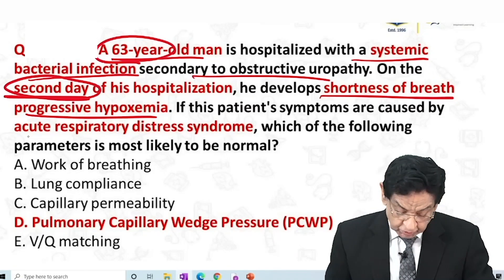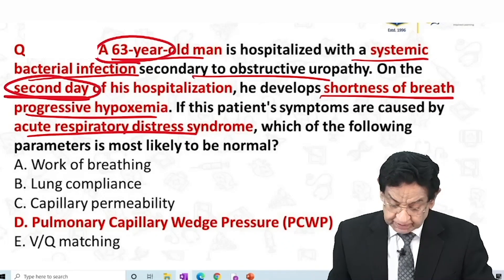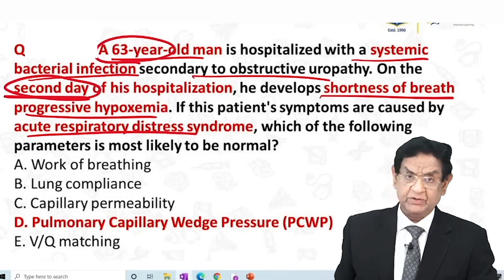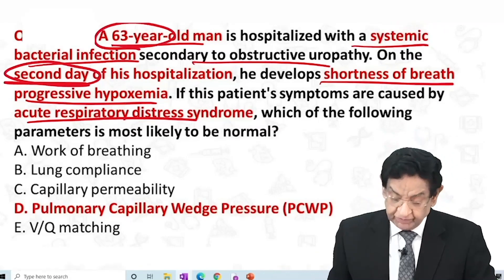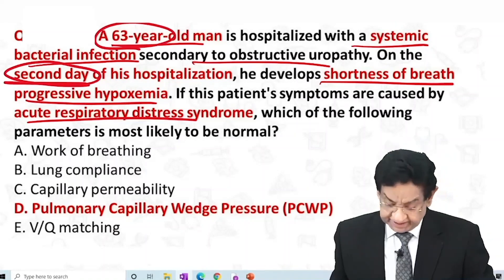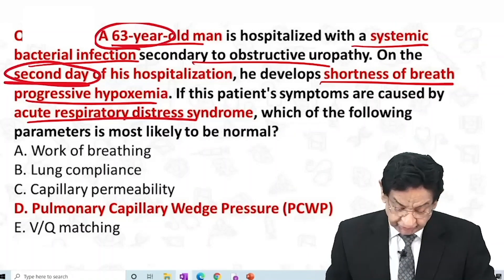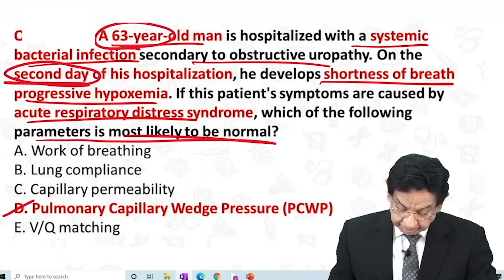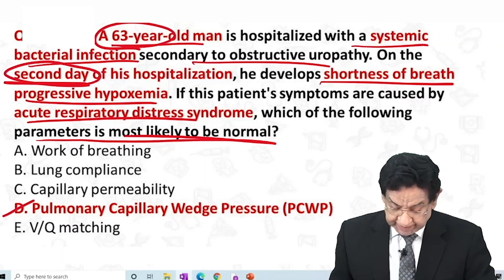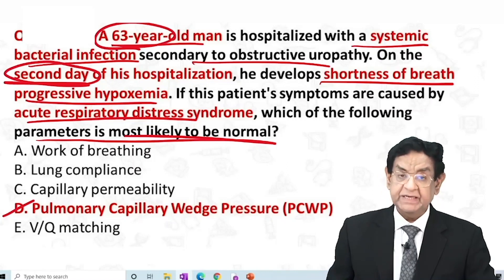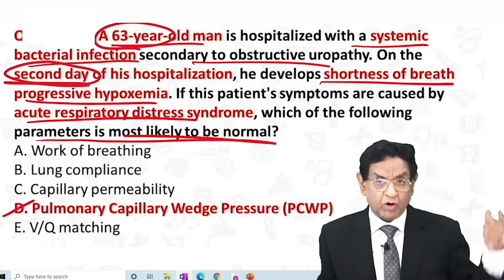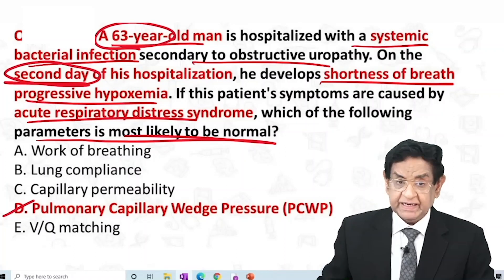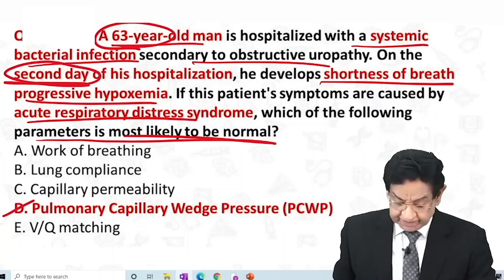Let's presume that he developed ARDS. The question has been made very simple — we presume the patient developed ARDS. Which of the following parameters will be normal? The answer is pulmonary capillary wedge pressure. All the other parameters will be abnormal except pulmonary capillary wedge pressure.